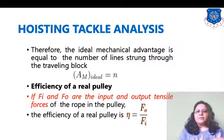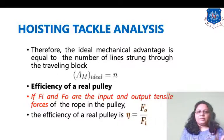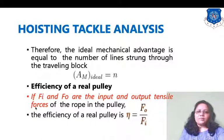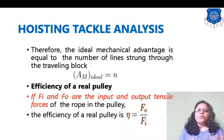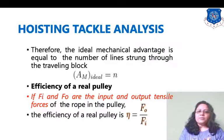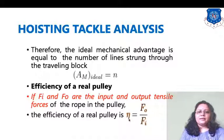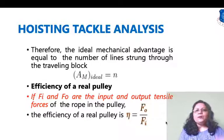Pulleys are also used in material handling systems. If FI and FO are the input and output tensile forces of the rope in a pulley, then the efficiency of a real pulley equals the output divided by the input: efficiency = FO / FI. This concludes the analysis of hoisting tackle equipment.